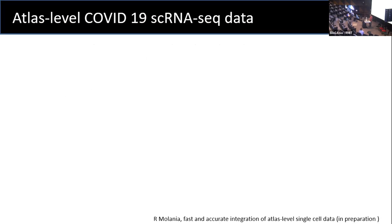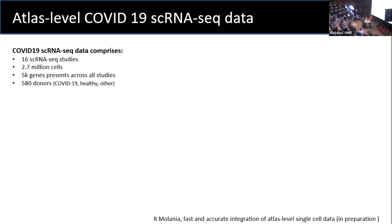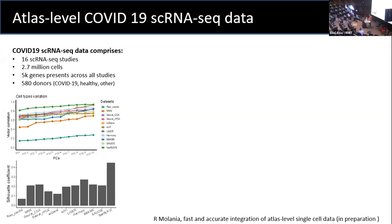I'm going to show you the performance of fast RUV3 on single cells. These are COVID data — one of the largest single-cell datasets — with 2.5 million cells, 16 studies, and 580 donors. I compared it with other popular methods for single-cell normalization and integration. The vector correlation in PCA shows how well you separate the cell types — the higher the better. You can see RUV3 stands higher, meaning the PCA has better correlation with cell types. The silhouette coefficients also show RUV3 performing well in terms of separating cell types.